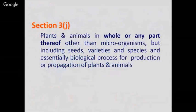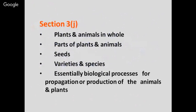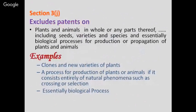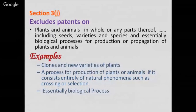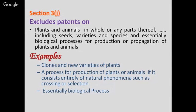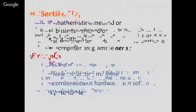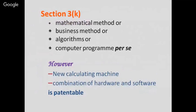Plants and animals in whole or any part thereof — other than microorganisms — including seeds, varieties, and species, and essentially biological processes for production or propagation of plants and animals, are not patentable. Examples include clones, new varieties of plants, or a process for production of plants or animals if it consists entirely of natural phenomena such as crossing or selection. Mathematical methods, business methods, algorithms, or computer programs as such are also not patentable. A computer program can come under copyright but cannot be patented; however, a new calculating machine combining hardware and software is patentable.